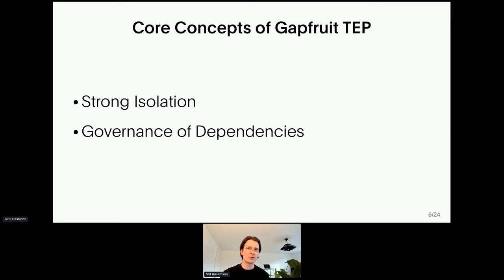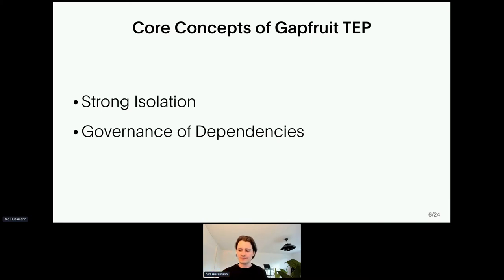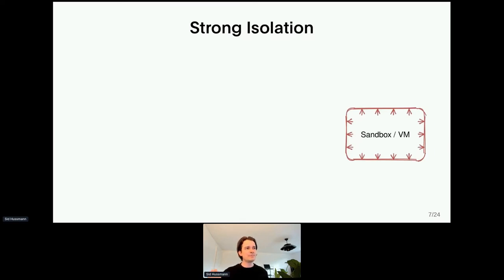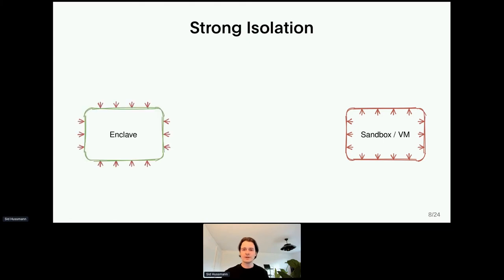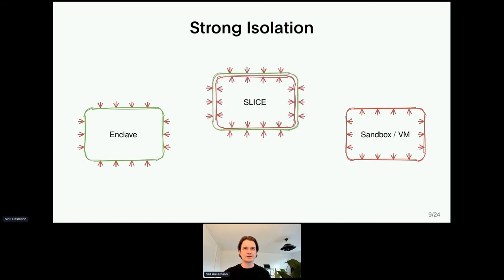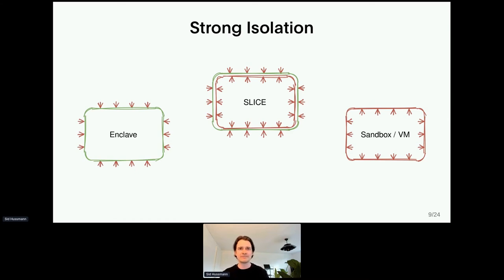Let me tell you more about the core concepts of GapFruit TEP. On one hand, you will have strong isolation of every component of the system. On the other, we govern the trust relationship of every part of the system. People are familiar with the term sandbox — the goal is to isolate untrusted code from breaking out. Enclaves, on the other hand, try to protect critical code from an untrusted environment. Our building blocks are called slices. They combine the properties of sandboxes with those of enclaves — for device drivers, protocol stacks, multiplexers, and applications. A slice itself can contain one or several components, even full-blown VMs. We call this the nested configuration mechanism.